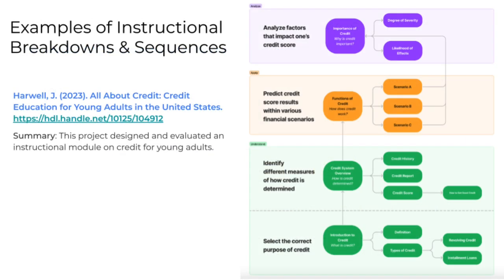Here's another example from John Harwell. This graphic reads from bottom to top. This was a project about credit scores for young adults, and the elements are color-coded related to Bloom's taxonomy. All green elements are related to understanding, all orange items are related to application, and all purple ones represent the higher cognitive level of analysis. He broke things down: what do young adults need to understand about the credit system, then apply that to predict credit score results in various financial scenarios, and ultimately analyze factors that impact one's credit score. A nice scope and sequence of the essential relevant content.